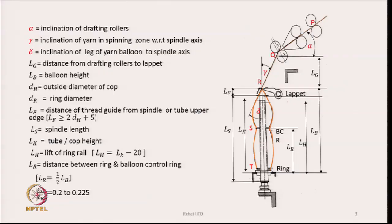The angle alpha is the inclination angle of the drafting rollers. Angle gamma is the inclination of the yarn in the spinning zone with respect to the spindle axis. Angle delta is the inclination of the leg of the yarn balloon to the spindle axis. There are also dimensions: lg, lb, and lh, which are shown in the diagram.